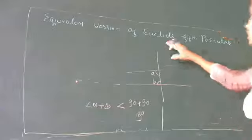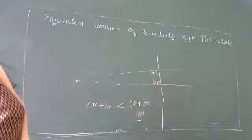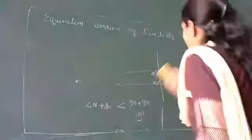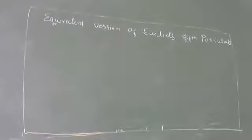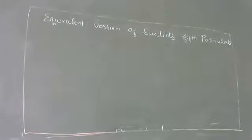The heading here is: equivalent version of Euclid's fifth postulate. Euclid's fifth postulate is very significant in the history of mathematics. We have just recalled it. With this fifth postulate, another mathematician — a Scottish mathematician — gave a related postulate. His full name is John Playfair.